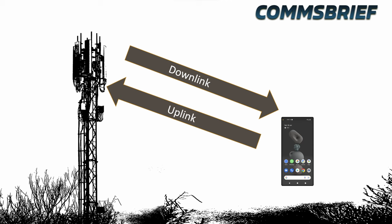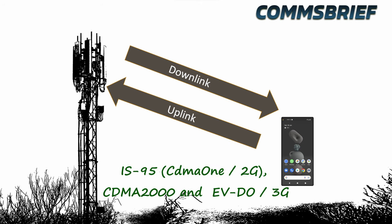The uplink and downlink terminologies are relevant for most mobile networks, but not CDMA networks. CDMA networks are IS-95, also called CDMA-1 for 2G, CDMA-2000 for 3G, and also EVDO for high-speed 3G data. Now if you live in the U.S. and in the past you have used someone like Verizon, then you may already have come across these terminologies.